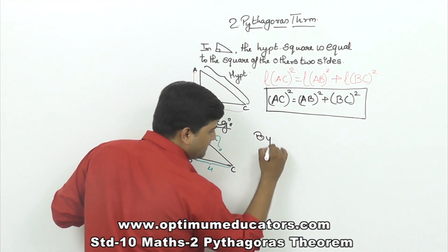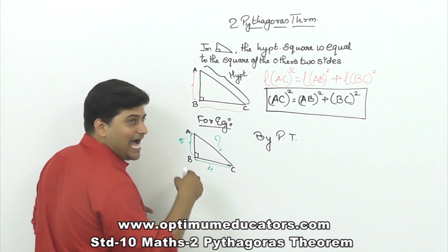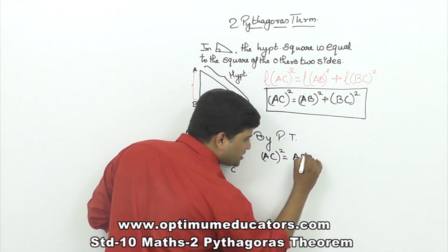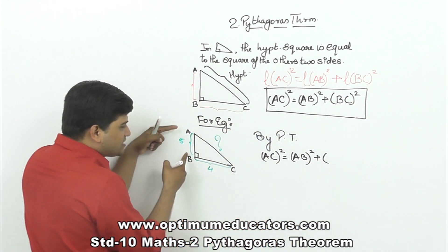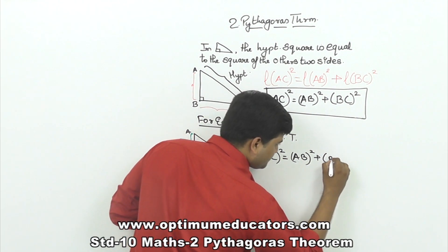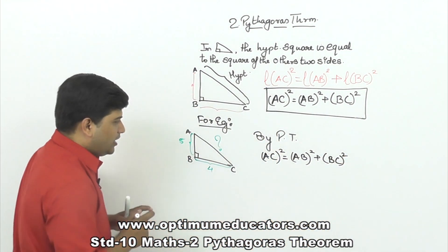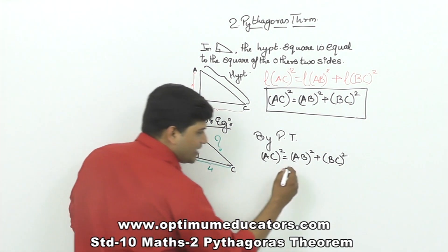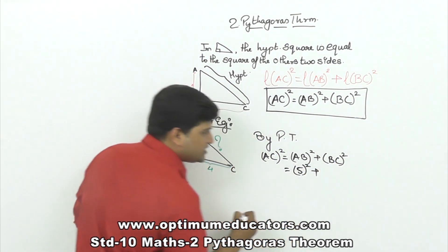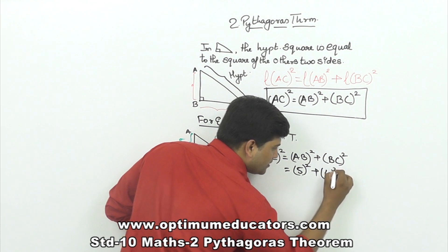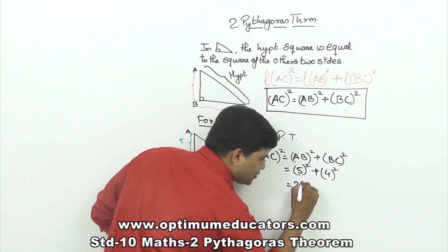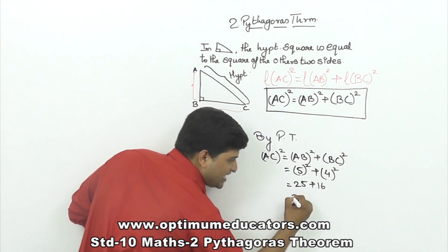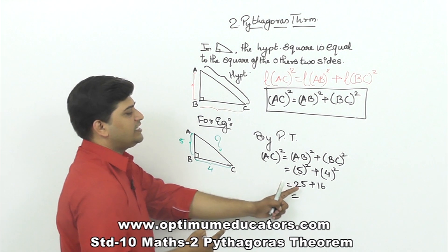By Pythagoras theorem, we can say that hypotenuse square equals the sum of the other two sides squared. That means AC² = AB² + BC². So AC² = 5² + 4² = 25 + 16 = 41.